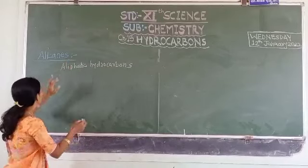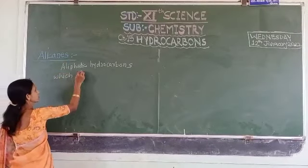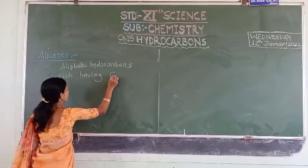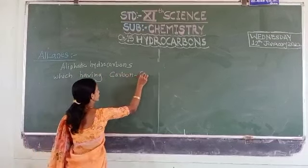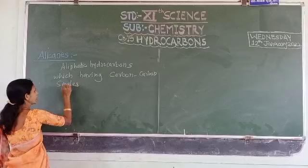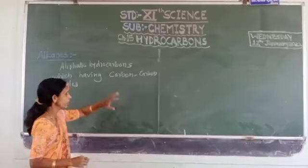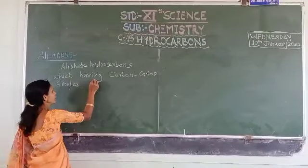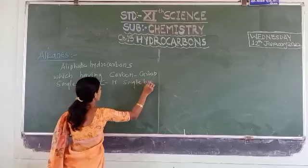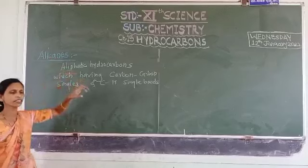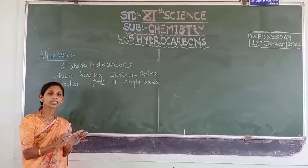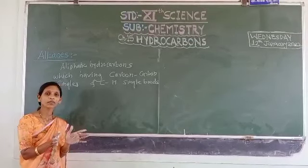Aliphatic hydrocarbons which contain carbon-carbon single bonds, as well as carbon-hydrogen single bonds. Those compounds are called alkanes — that is the definition of alkanes.